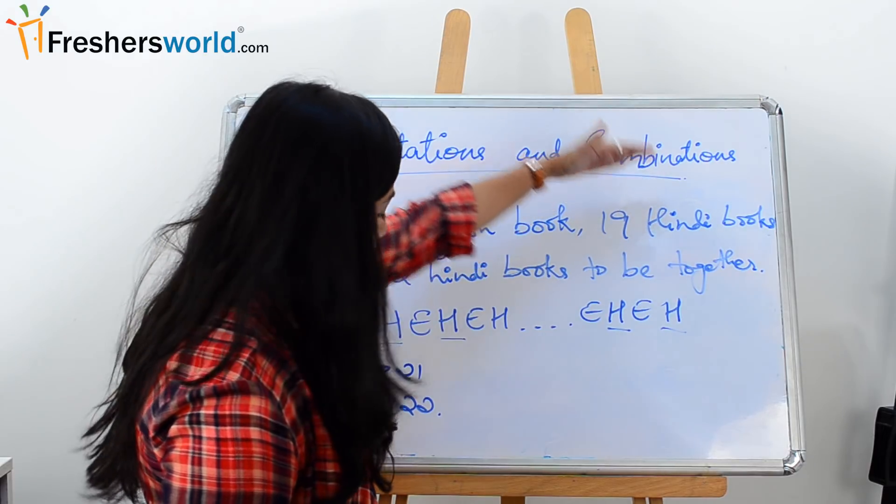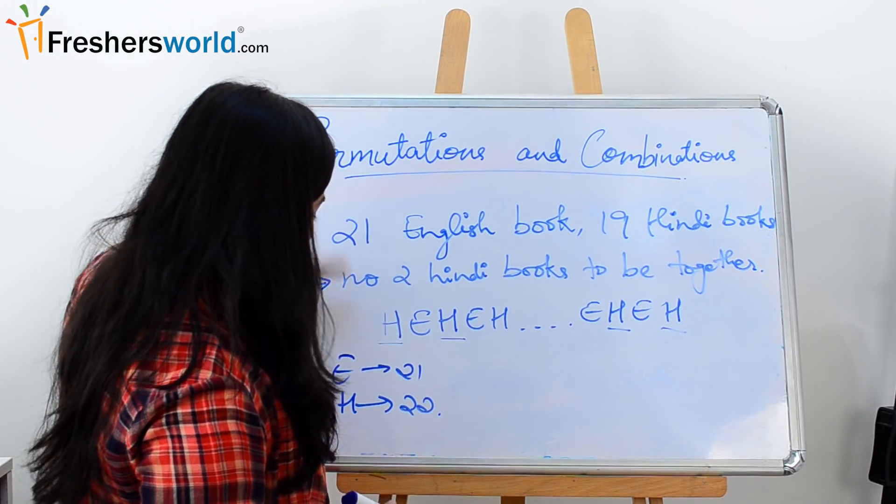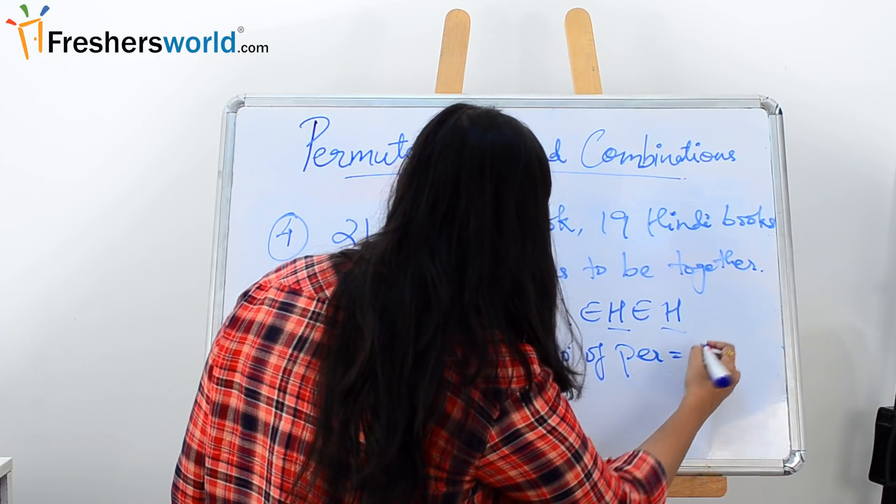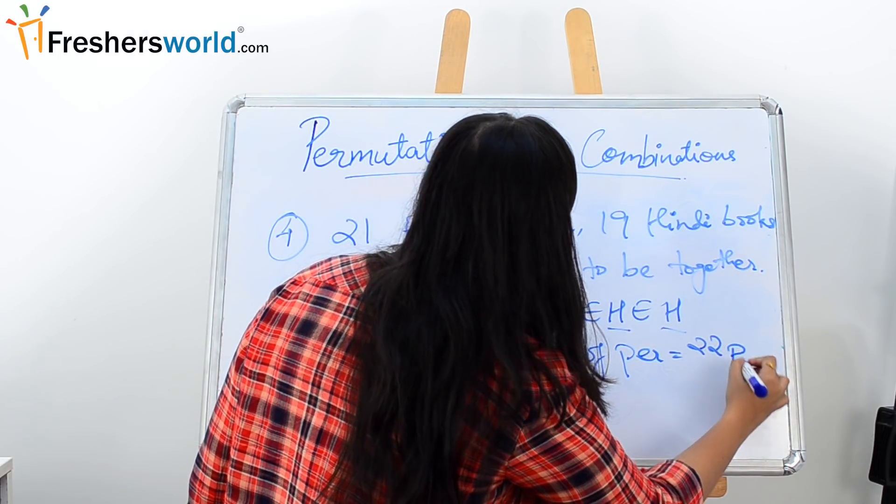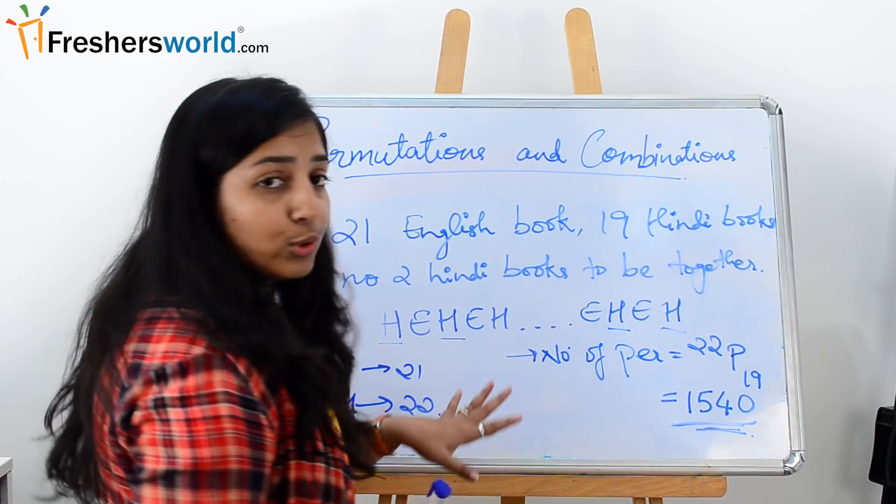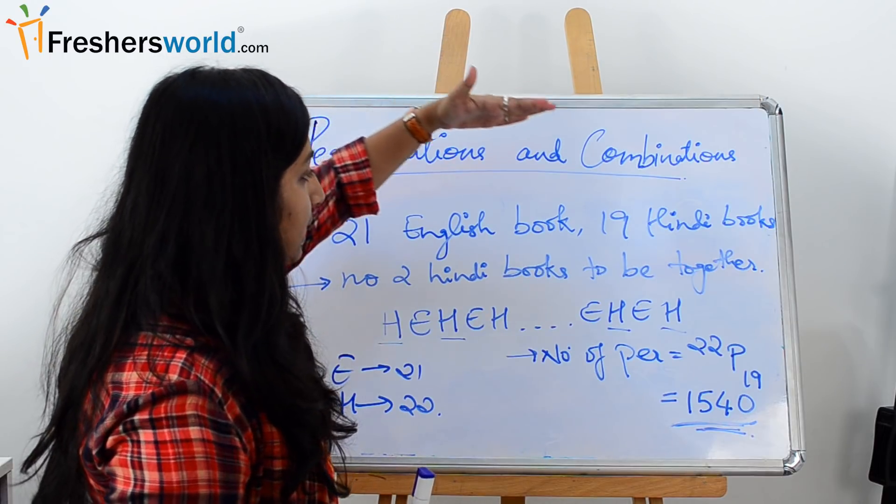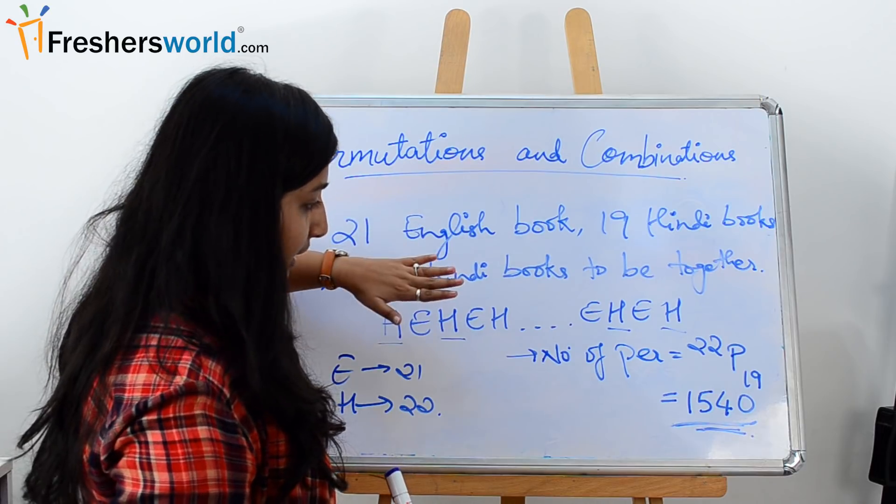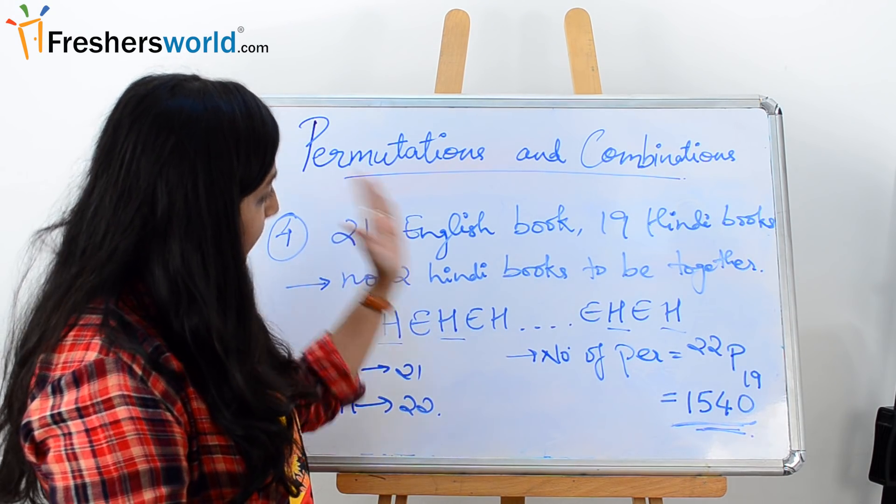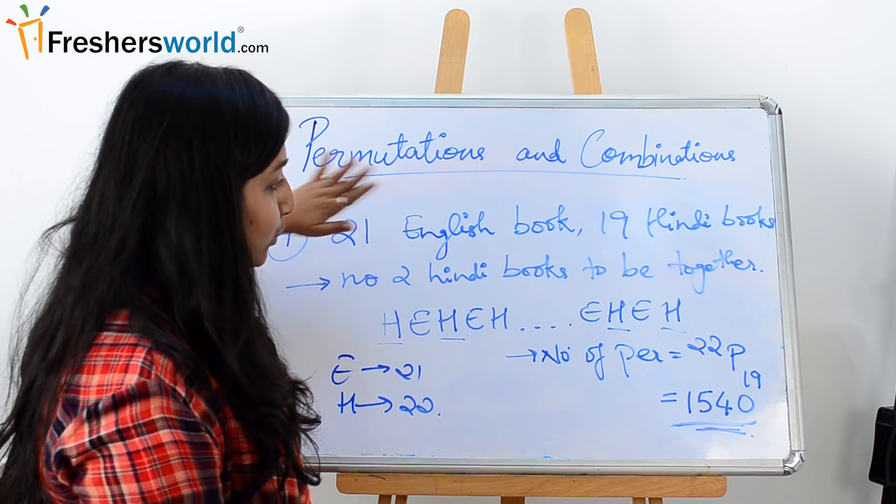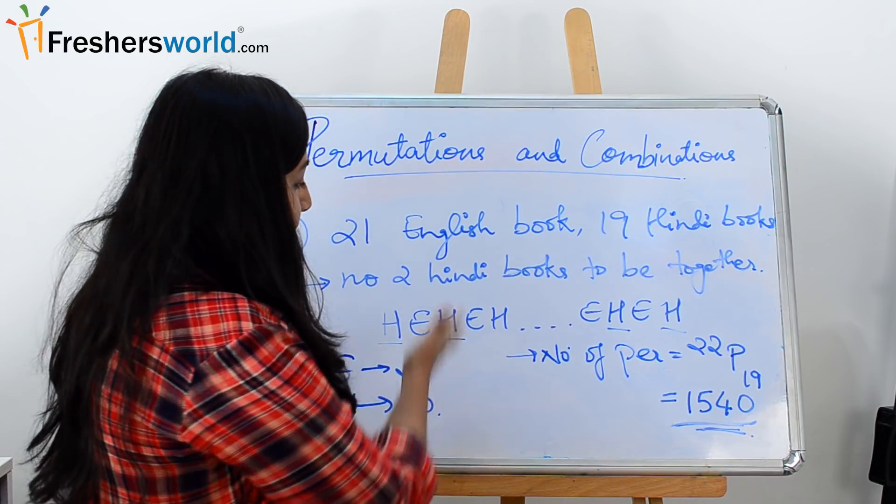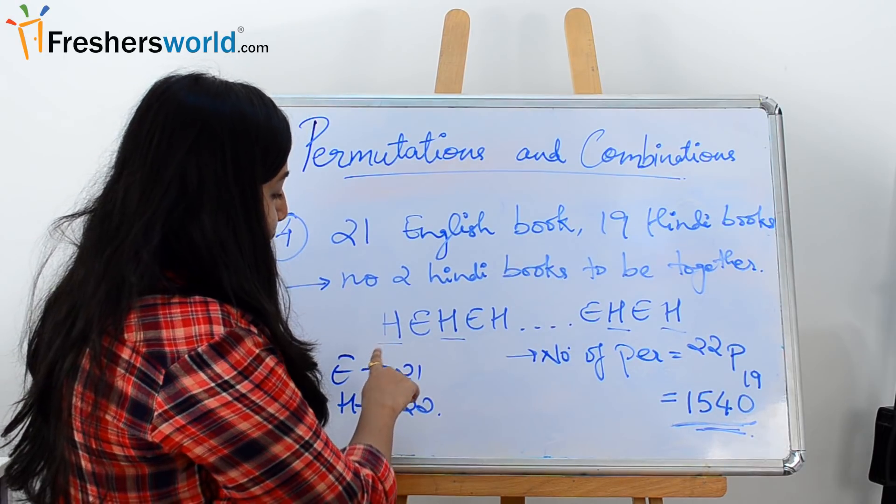Now you see, we only have 19 books, but the number of places in which we can arrange these Hindi books are 22. So here the number of permutations would be 22P19, which is equal to 1540. So the number of ways in which we can arrange these 21 English books and 19 Hindi books such that no two Hindi books are together will be 1540. So there are 1540 different ways in which we can arrange these 21 English books and these 19 Hindi books together in such a way that no two Hindi books are together. You can understand it better if you just write these E 21 times and you try to put H in between all those E's. You will find 22 H.